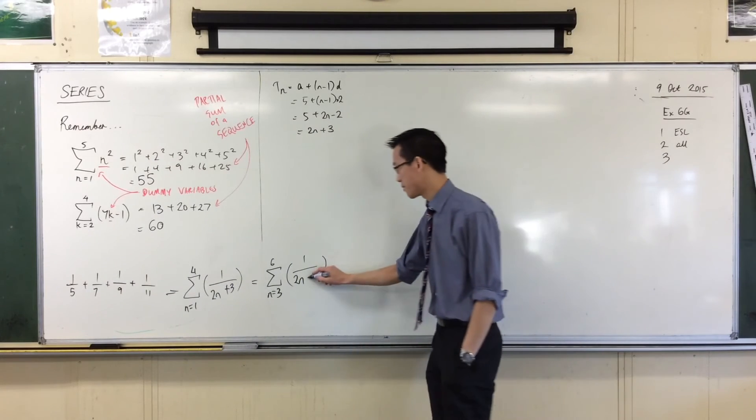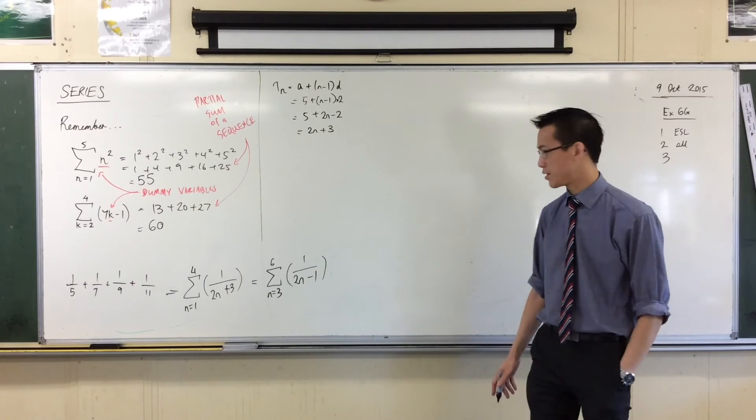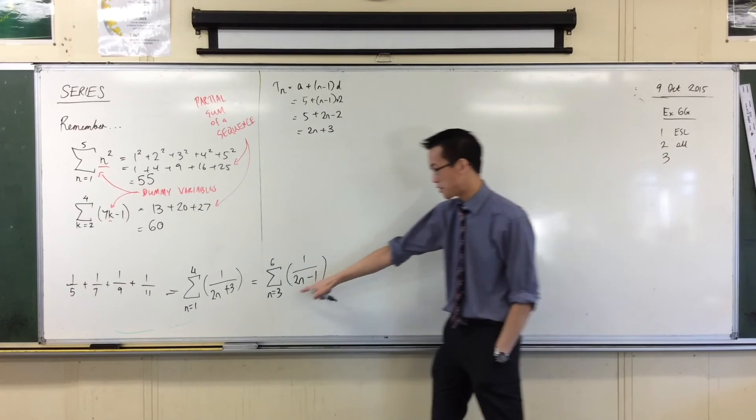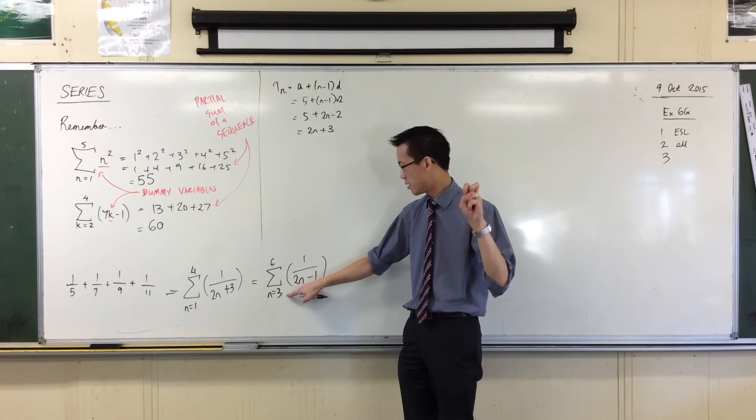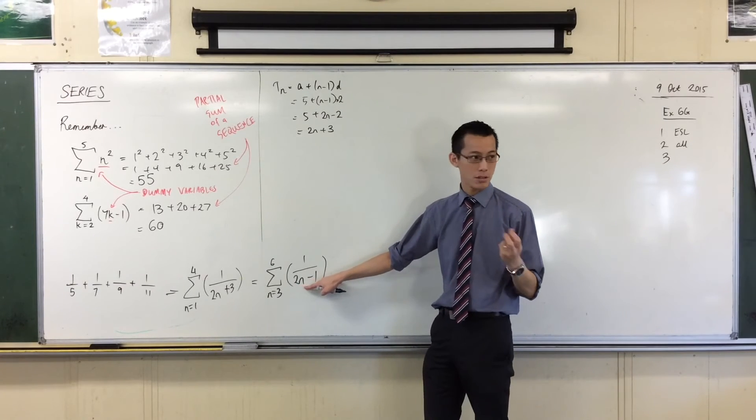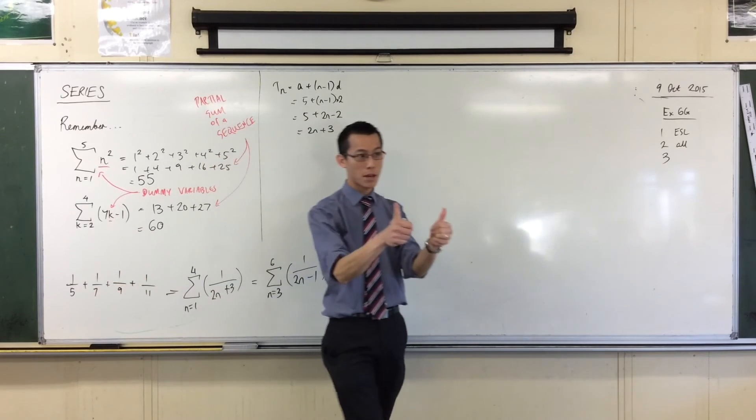Right? Now, just pause for a minute. Does it work? Is the pattern going to make sense? Well, when I put in n equals 4, which is the next term, I've got 2 times 4, which is 8, take away 1, which is 7. Thumbs up. Okay?